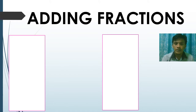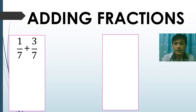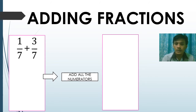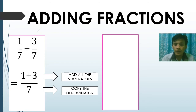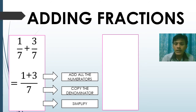Adding fractions: the given is one over seven plus three over seven. As you can see, the given problem has similar denominators, which is seven. First, add all the numerators; next, copy the denominator which is seven. One plus three over seven — simplify one plus three and that is equal to four. So our final answer is four over seven.